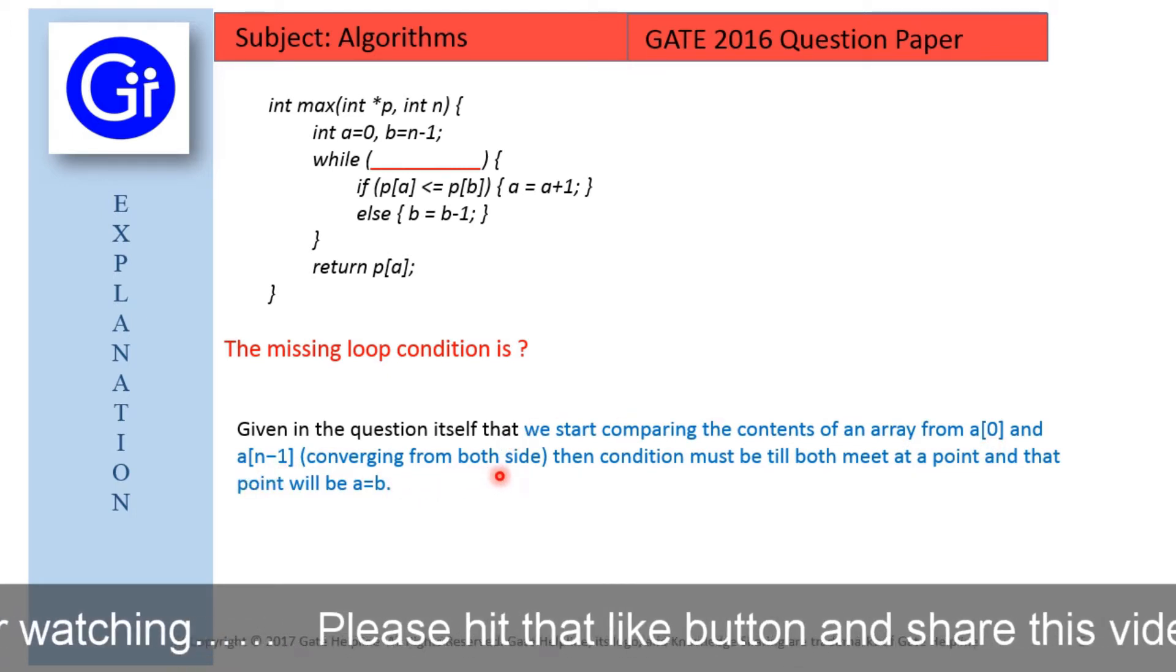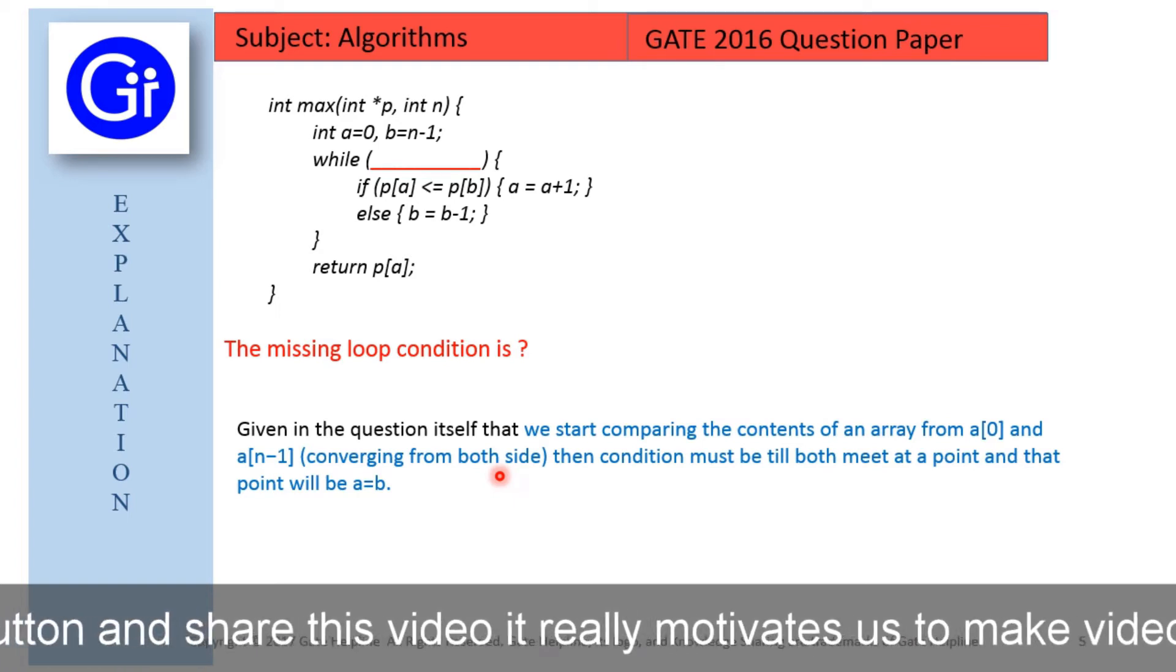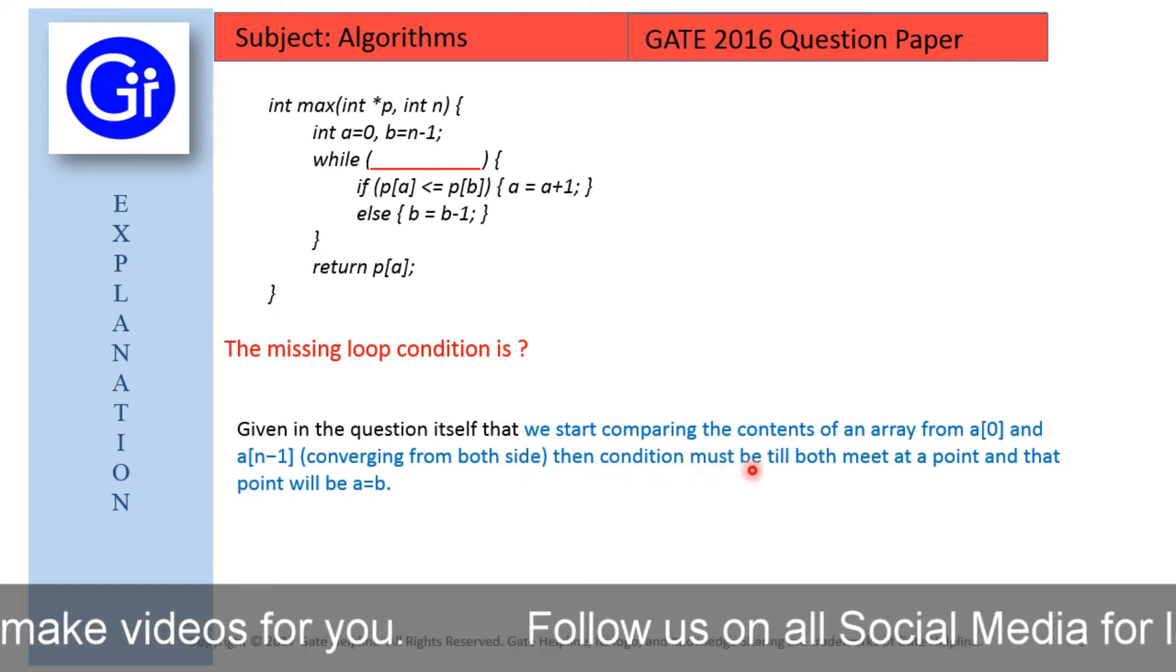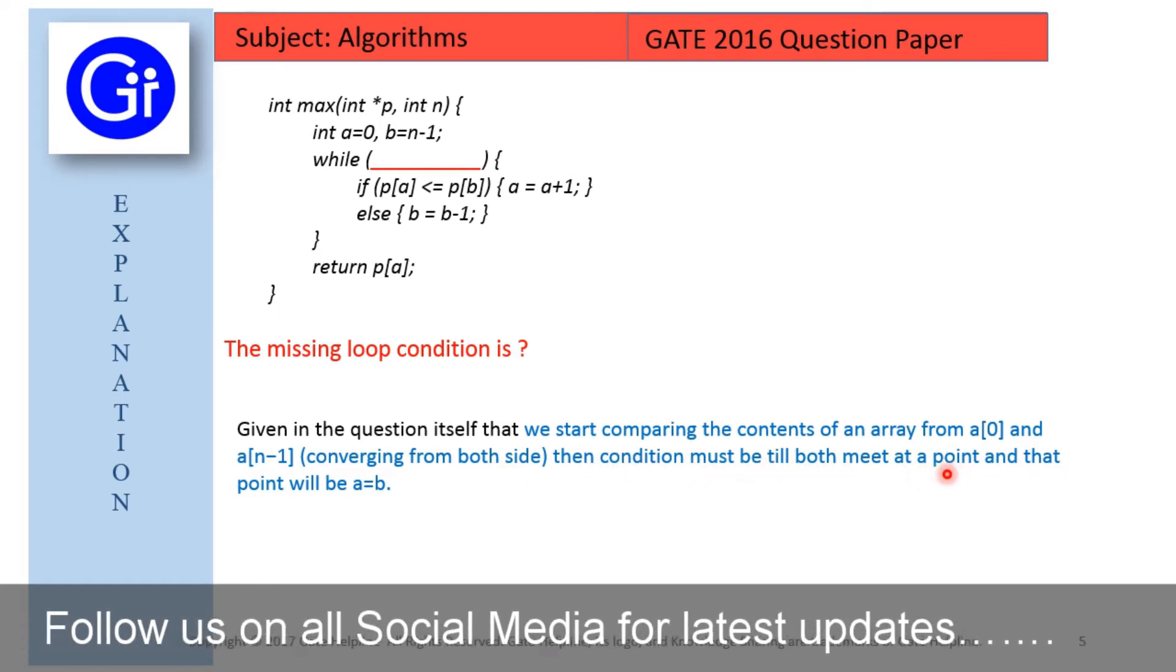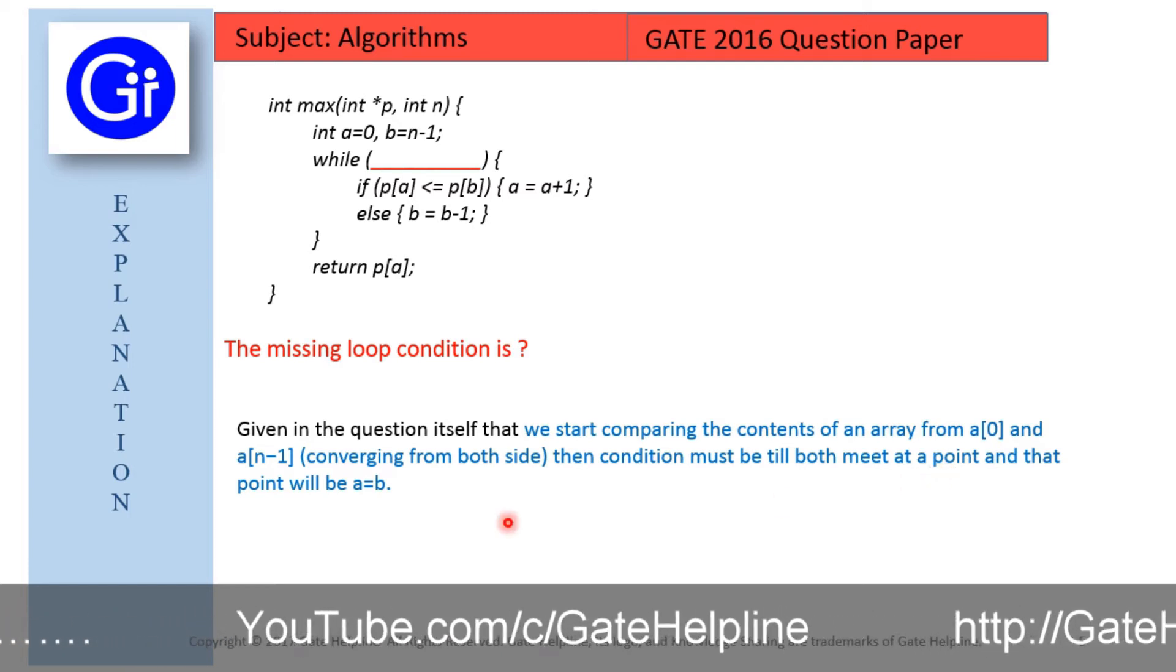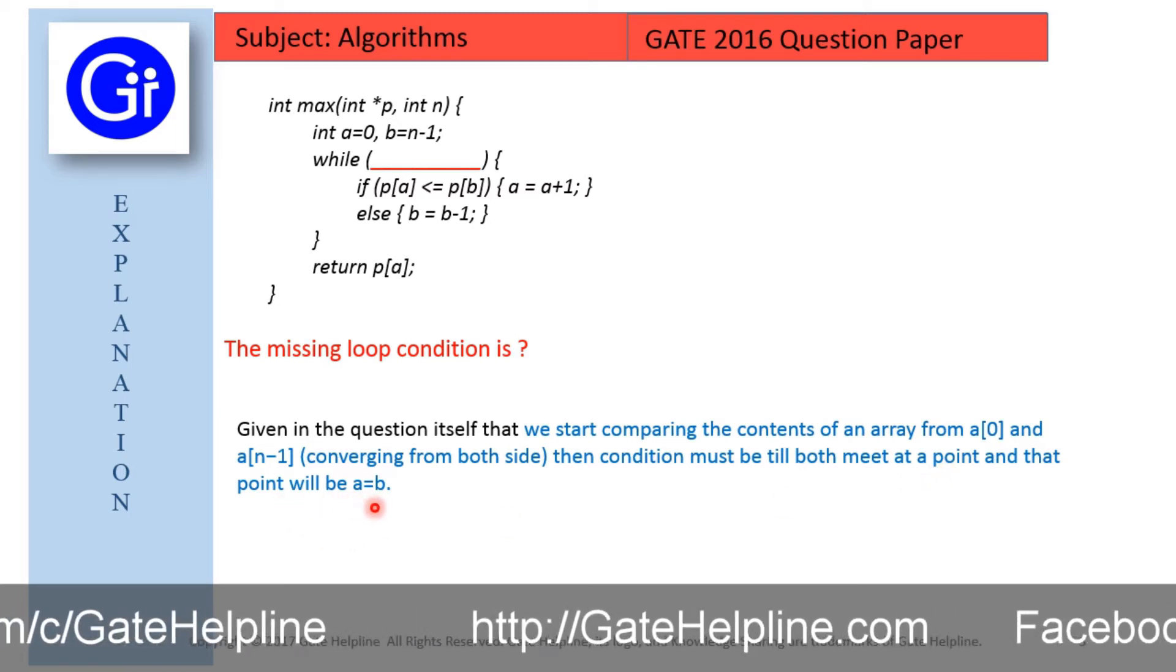That is, we are increasing the left hand side and decreasing the right hand side. Then condition must be till both meet at a point, because they both are converging to the middle and both points will be a equals to b.